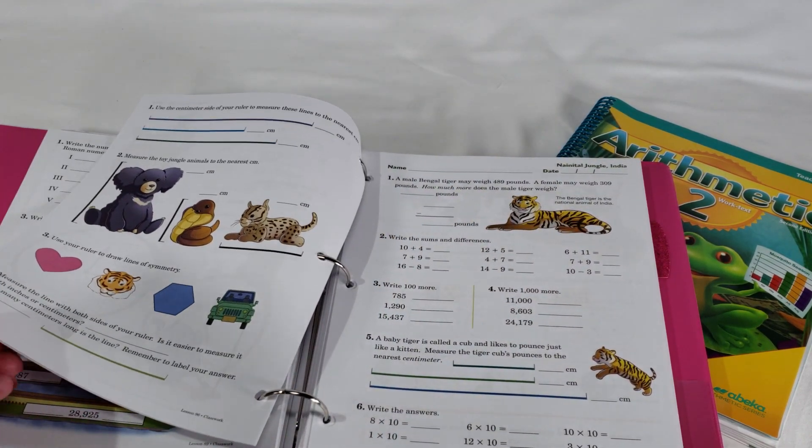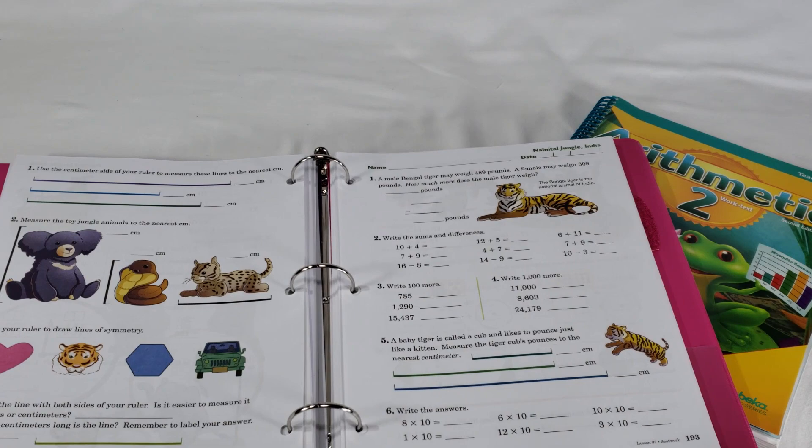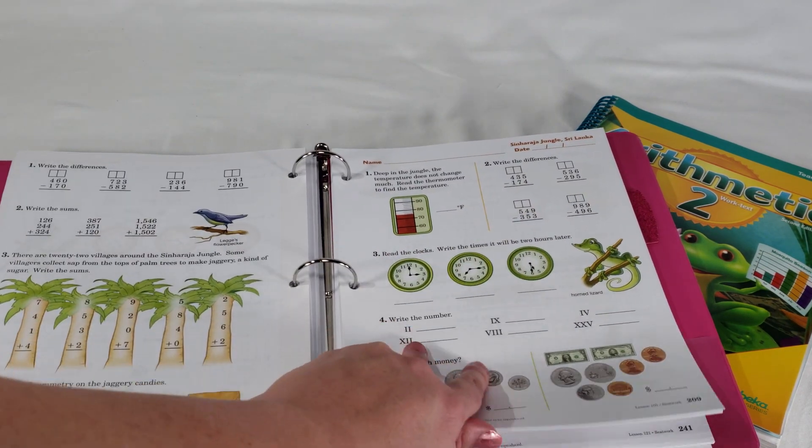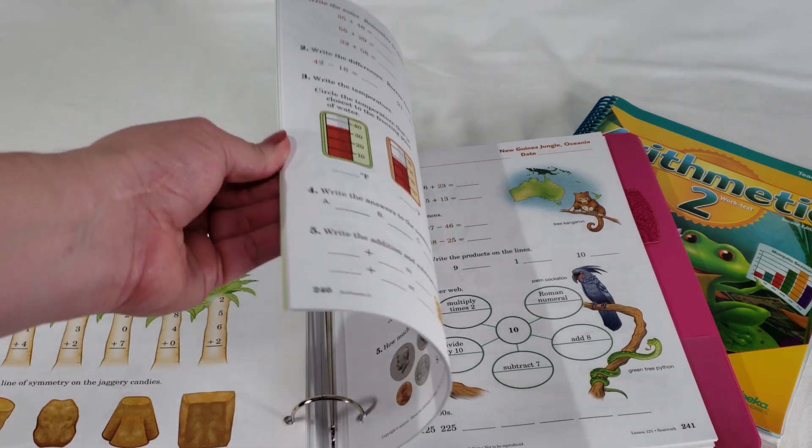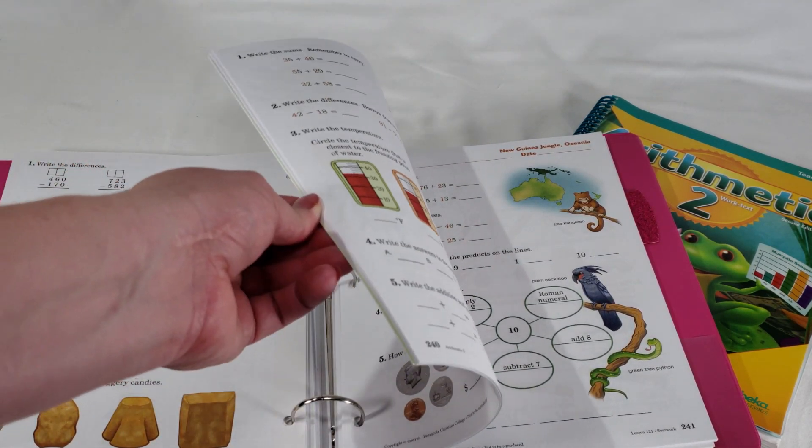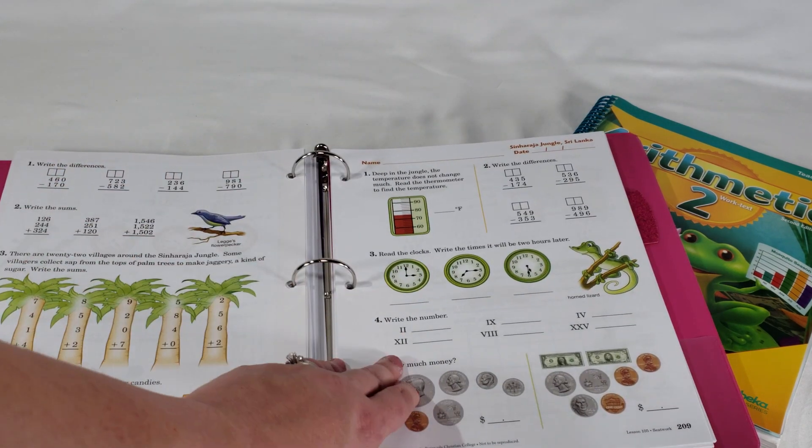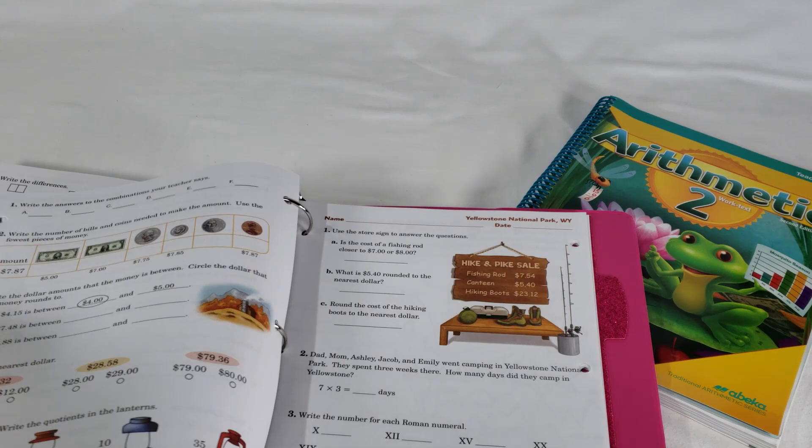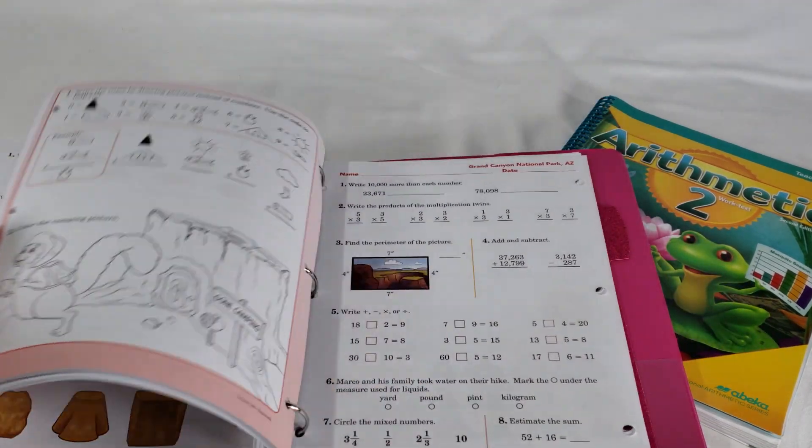So if you are secular and don't want to use Christian-based curriculum but you really like the look of what you're seeing in this Abeka, I wouldn't rule it out just because it's a Christian-based curriculum. This math curriculum, I think you can get by with it. Even with the Horizons, we only found like one or two problems in both grade levels that we did, and that was like word problems about offering.